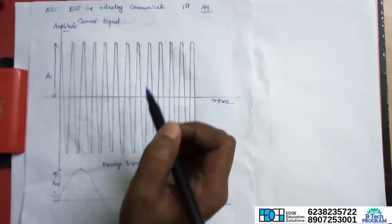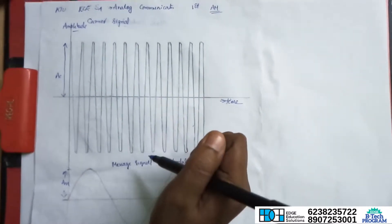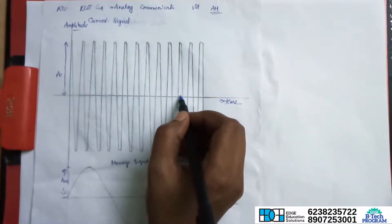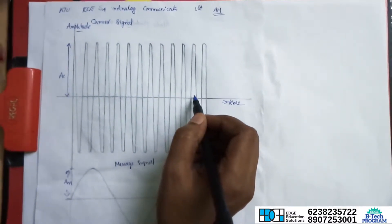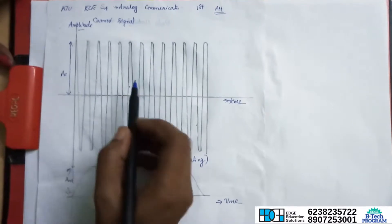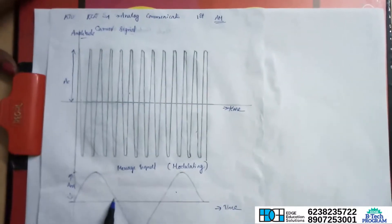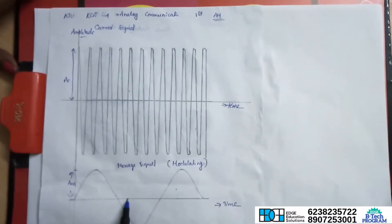In this module, we have a carrier signal and a message signal. The carrier signal is plotted on the x-axis against time. This signal is a message signal.